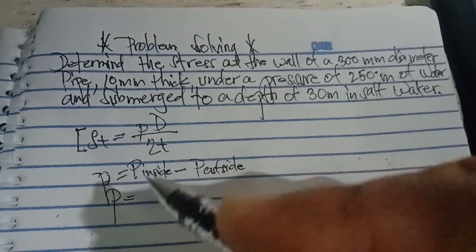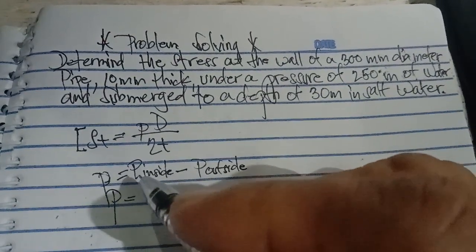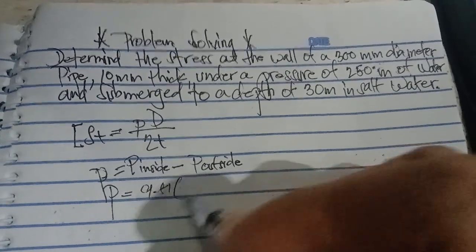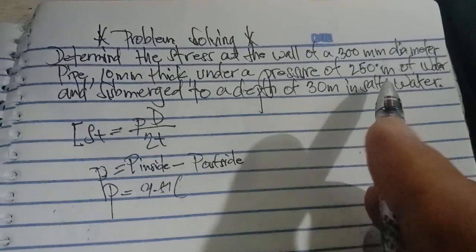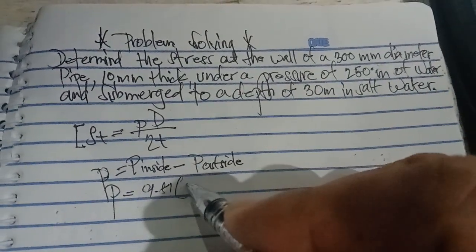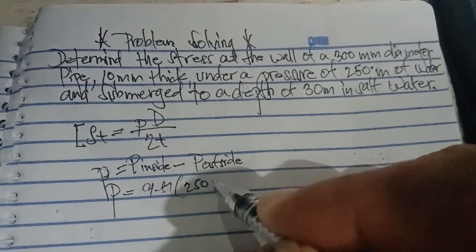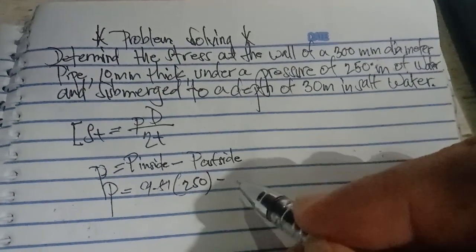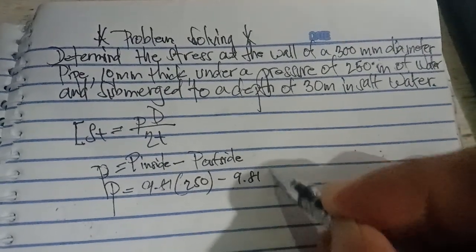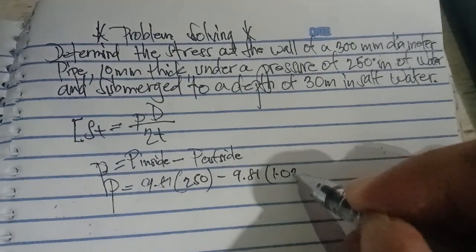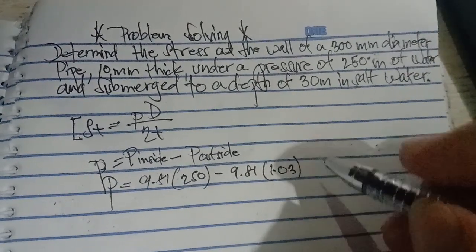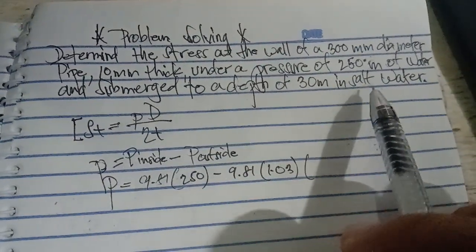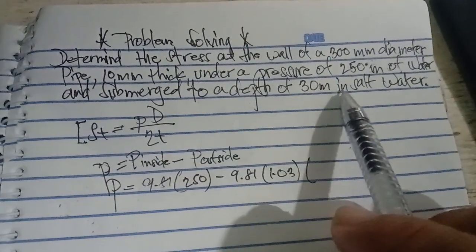P inside is equal to 9.81 times 250 meters. P outside is 9.81 times 1.03 times 30 — that is, 30 meters in salt water.